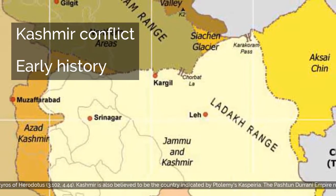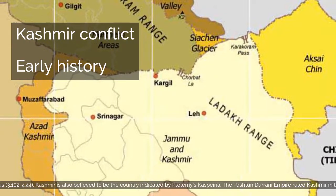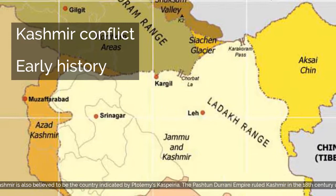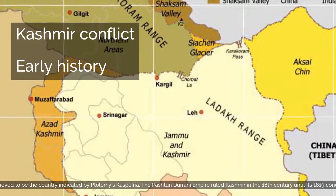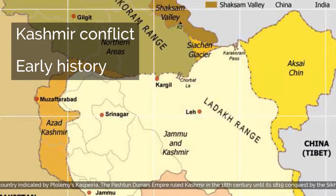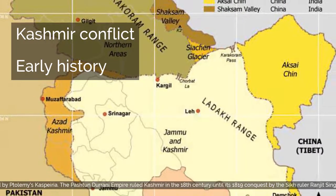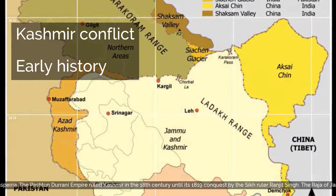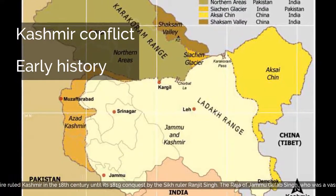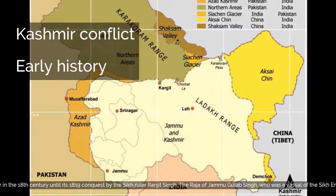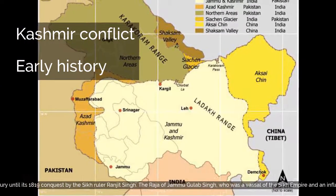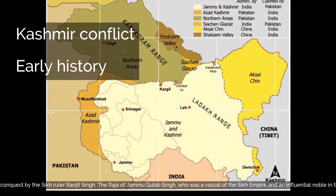Kashmir is also believed to be the country indicated by Ptolemy's Kasperia. The Pashtandarani Empire ruled Kashmir in the 18th century until its 1819 conquest by the Sikh ruler Ranjit Singh.